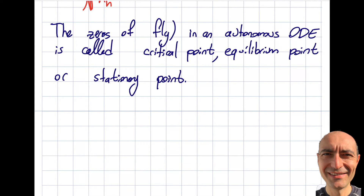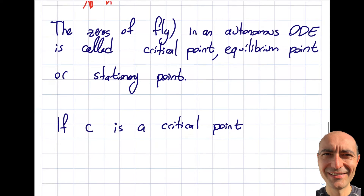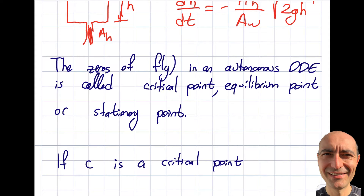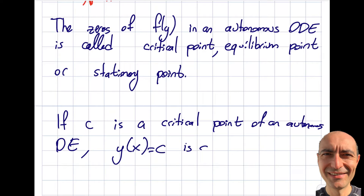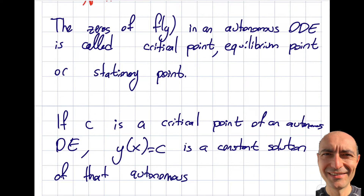These zeros are called critical points, equilibrium points, or stationary points. If C is a critical point — meaning f(C) = 0 — then y(x) = C is a constant solution of that autonomous ODE. It's not very complex: if C is a critical point of an autonomous ODE, that particular constant is a solution.